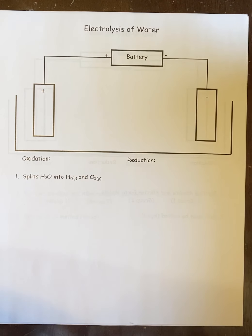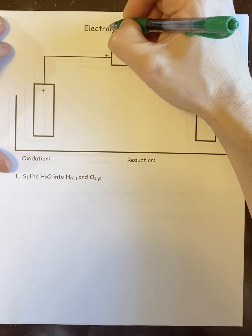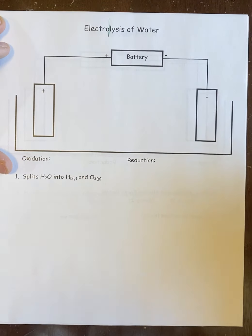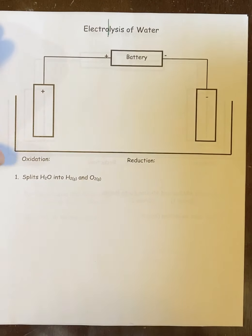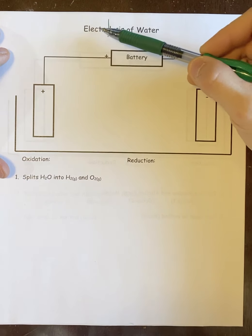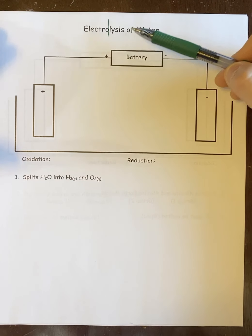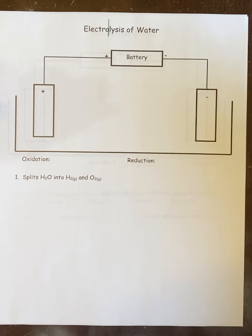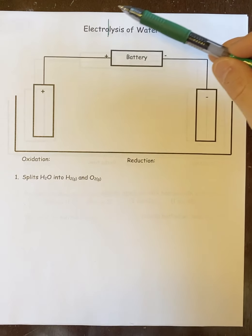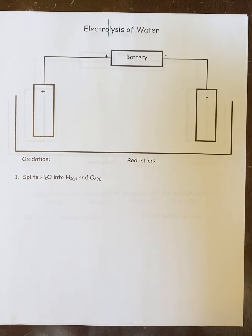So electrolysis of water—if you think about the word electrolysis, it really is broken up into two: electro and lysis. Electro means electricity, and lysis talks about—think of it like lysosomes in cell biology. It's what splits the cell in half. And so it's really using electricity to split up water. That's basically what it means.